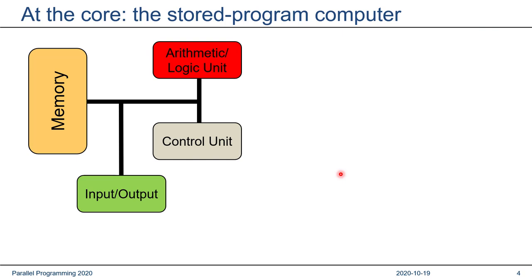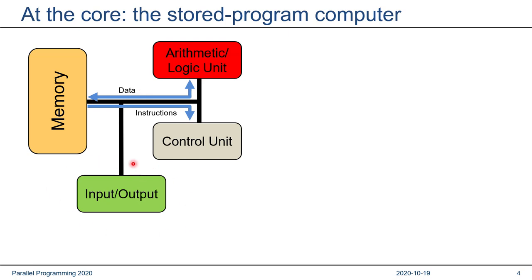At the heart of every computer we're using today is the stored program computer concept. It was invented in the 1930s of the 20th century, and it comprises a surprisingly small collection of components. There's a control unit and arithmetic logic unit, which do the actual work. The purpose of the control unit is to read instructions from memory. These instructions are encoded as simple numbers, usually organized in bytes or words or quad words. The arithmetic logic unit obtains data from memory and performs operations on that data, and more data is then written back to memory. We also need some input-output hardware to get the results out of the system.